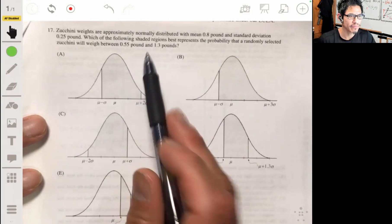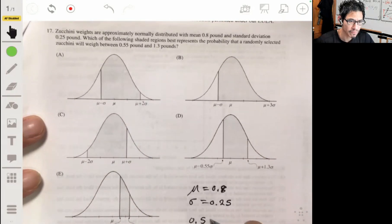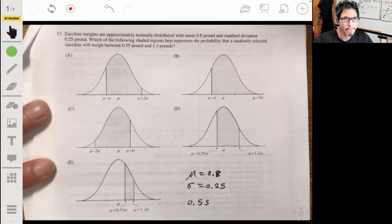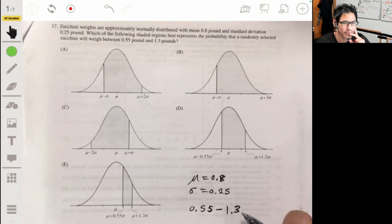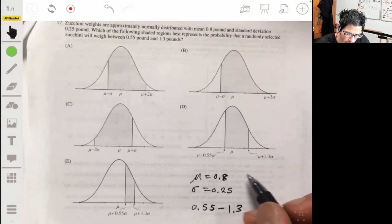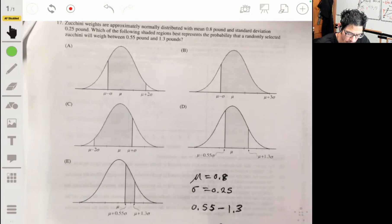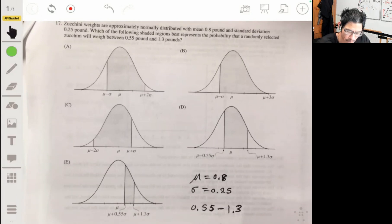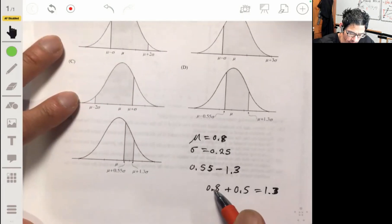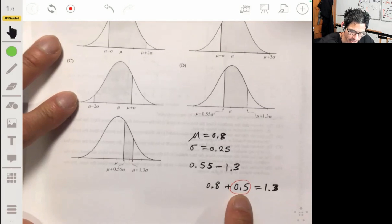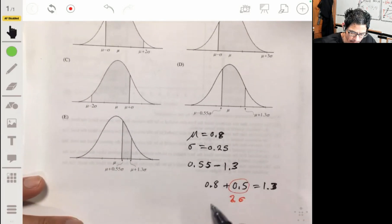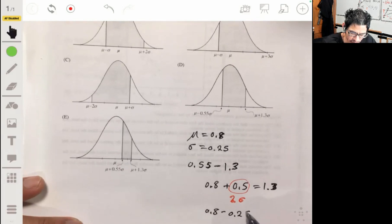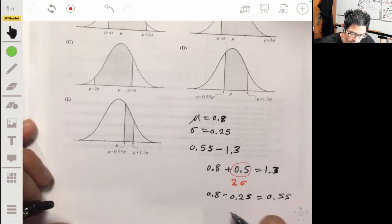Well, the mean is 0.8, so that means mu is 0.8. And the standard deviation is 0.25. And if we're going from 0.55 to 1.3, 1.3 is 0.5 more than 0.8. So 0.8 plus 0.5, that'll give you 1.3. And 0.5 is just two standard deviations. So you're adding two standard deviations to the mean. And 0.55 is just 0.8 minus 0.25, that's going to be 0.55. So that's just one standard deviation below.